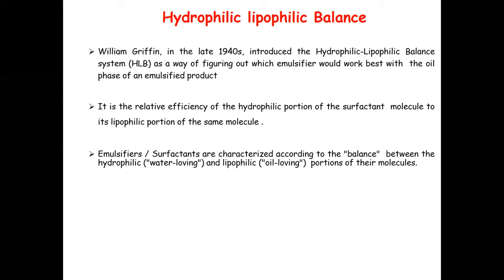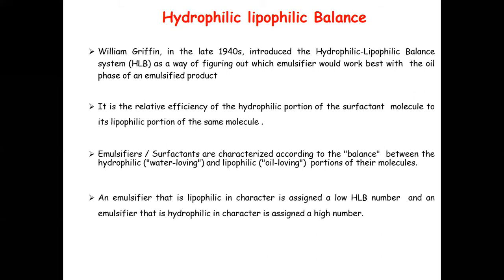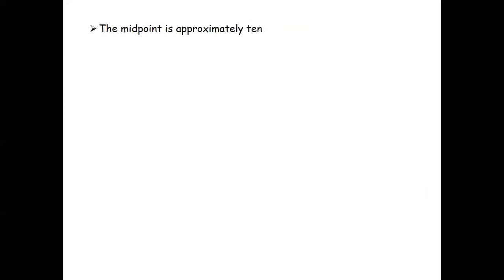Emulsifiers or surfactants are characterized according to the balance between hydrophilic (water-loving) and lipophilic (oil-loving) portions of their molecules. An emulsifier that is lipophilic in character is assigned a low HLB number, and one that is hydrophilic is assigned a high HLB number. The midpoint is approximately 10, and assigned values range from 1 to 40.